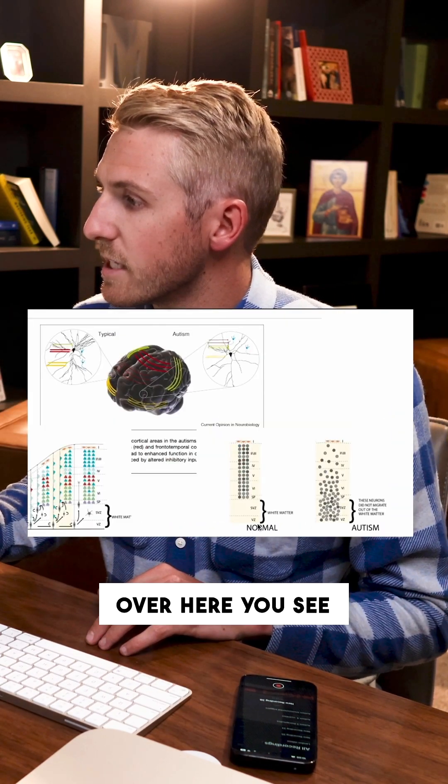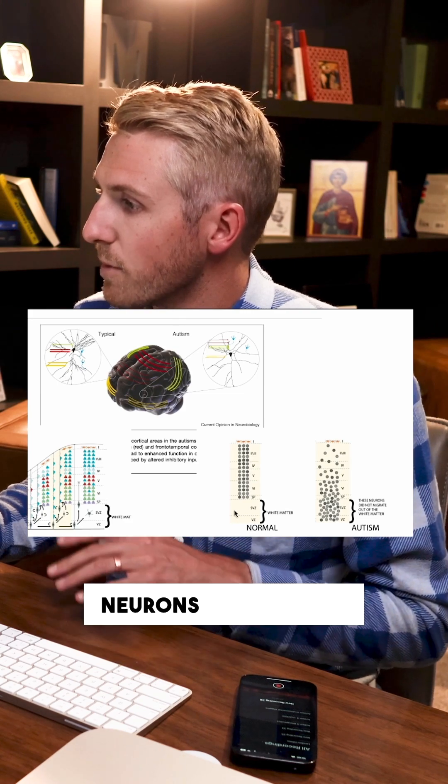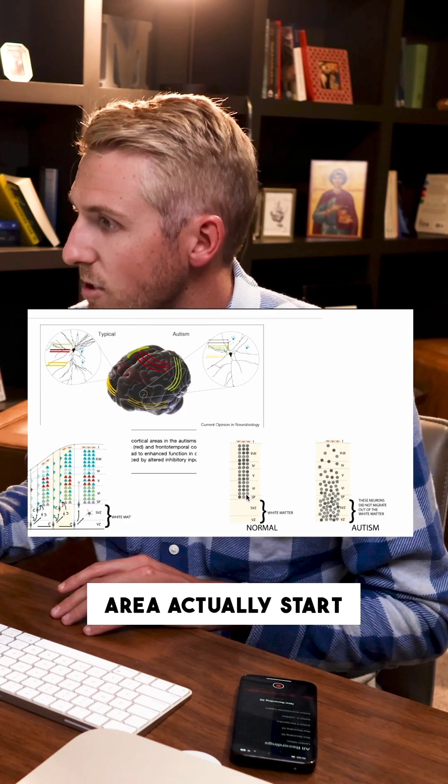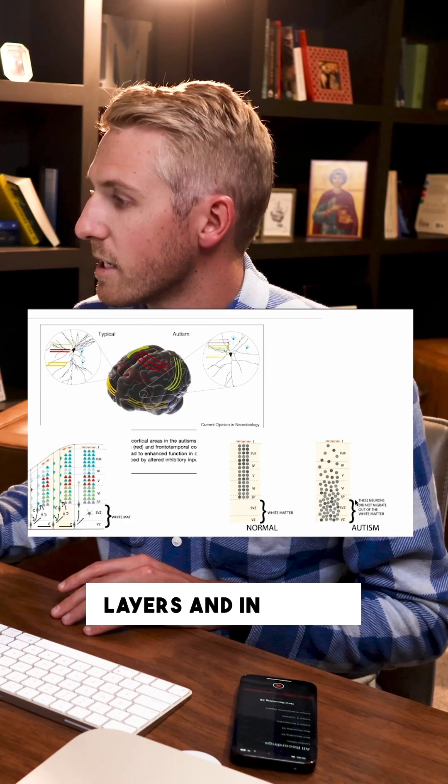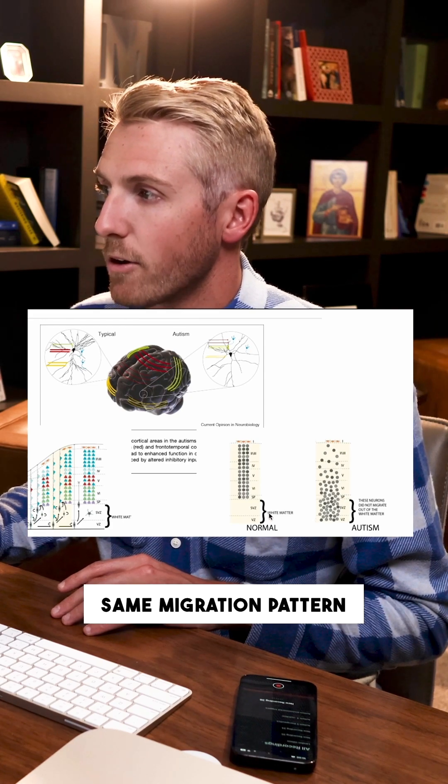So over here, you see as the brain matures, those neurons that should be in this lower area actually start migrating to these higher cortical layers. And in autism, we don't see that same migration pattern happening.